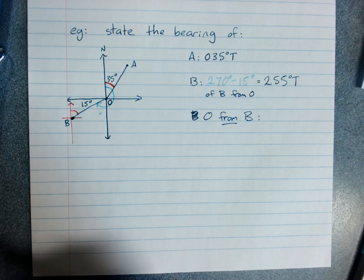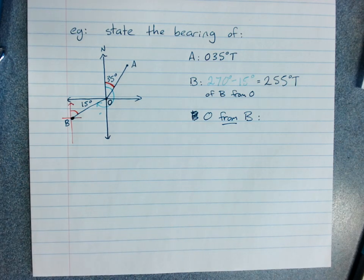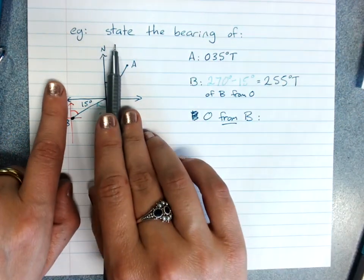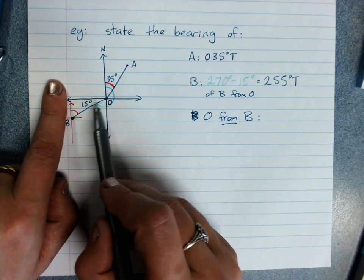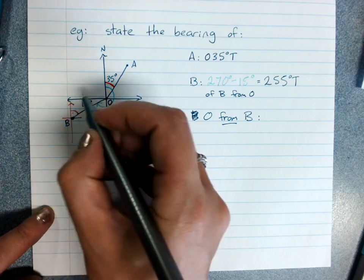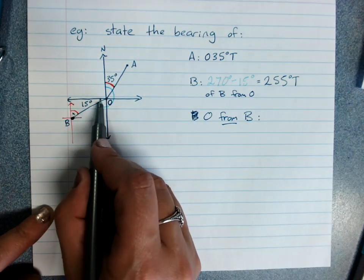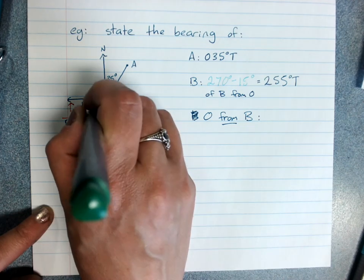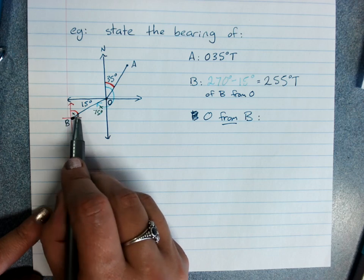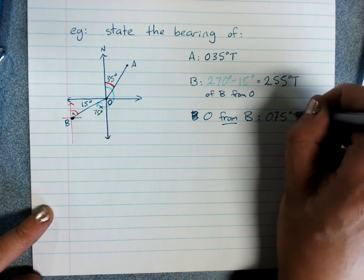There's a couple of ways we can look at it. I could remember that these two lines, north-south, north-south, are parallel. And so this line in between them says those angles are alternate, and they will be equal. So that angle here equals that angle there. 90 take away 15 would give me 75. So O from B will be 75 degrees or 075 degrees true.